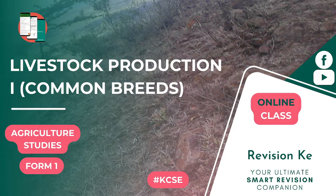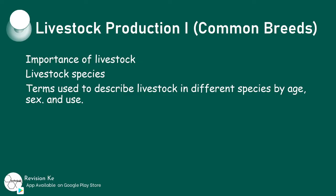By the end of this topic, we should be able to name various livestock species, define the terms livestock breed and type, describe the various breed characteristics, state the origin of various livestock breeds, classify the various breeds into types, name the external parts of various livestock species, and finally demonstrate an appreciation of the socio-economics of livestock.